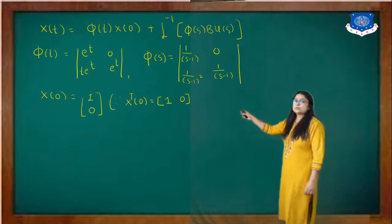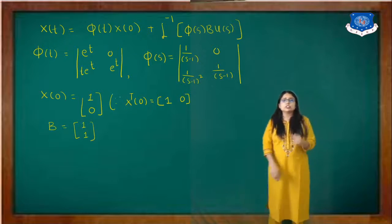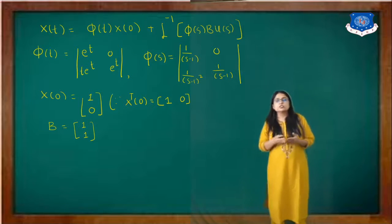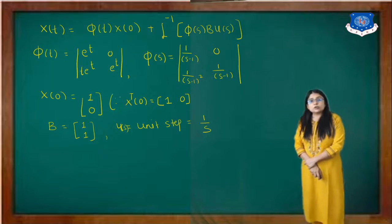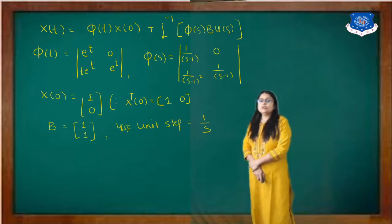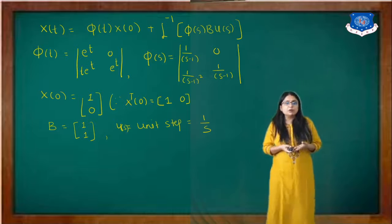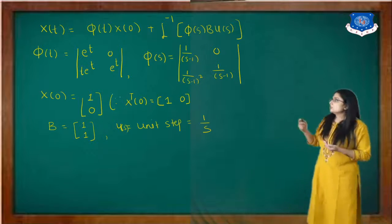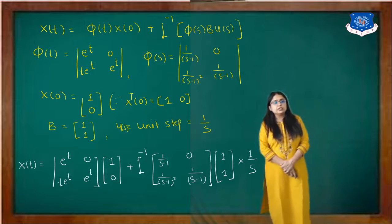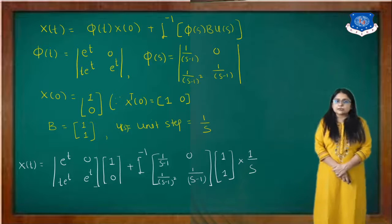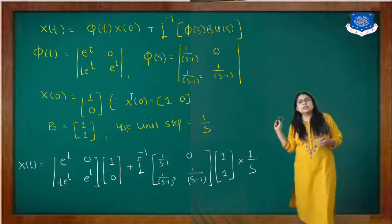Now substitute all values into x(t). The first term, phi(t)·x(0), gives [[e^t, t·e^t],[0, e^t]] times [1, 0], which equals [e^t, t·e^t]. The second term is inverse Laplace of [[1/(s-1), 1/(s-1)^2],[0, 1/(s-1)]] times [1, 1] times 1/s. Performing the matrix multiplication: first row first column gives 1/(s-1); second row first column gives 1/(s-1)^2 plus 1/(s-1), all multiplied by 1/s.